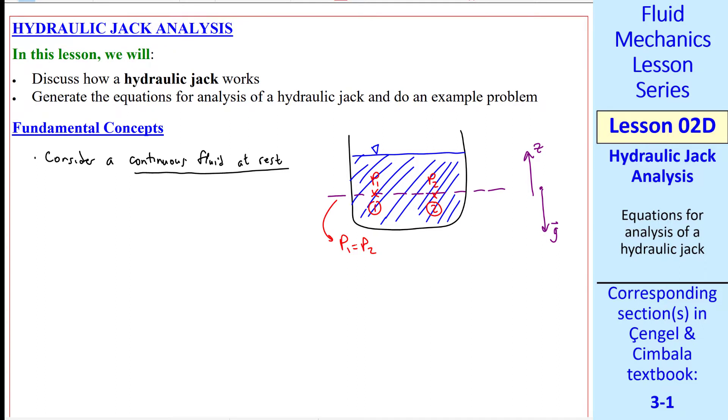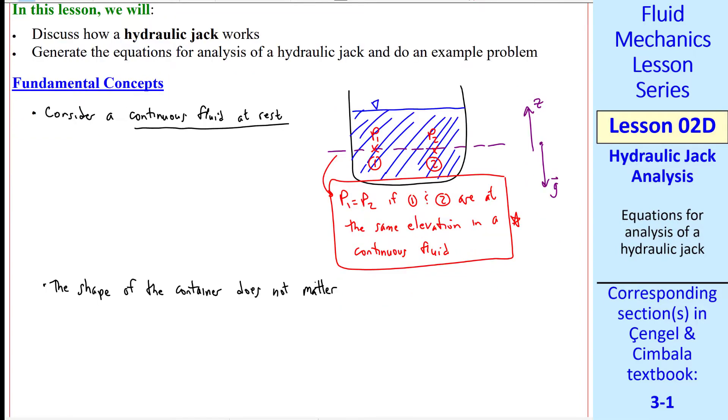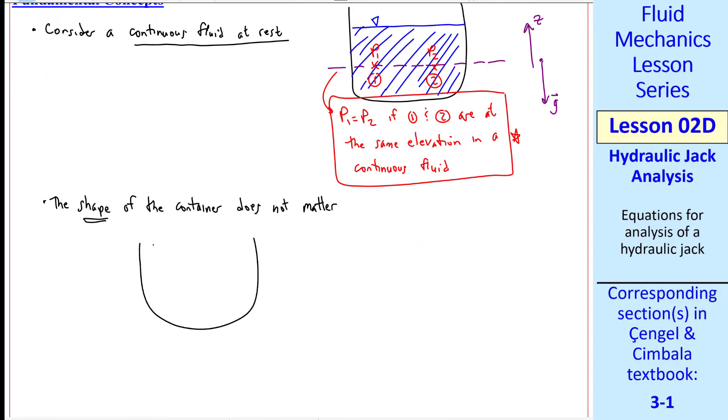We make this general statement: P1 equal P2 if 1 and 2 are at the same elevation in a continuous fluid. It turns out that the shape of the container does not matter. For example, what if we had a container like this, with our liquid inside, each leg exposed to atmospheric pressure. Again, we define two points at the same elevation, 1 and 2. Then P1 equal P2 here also.